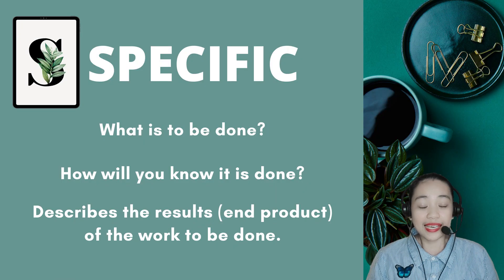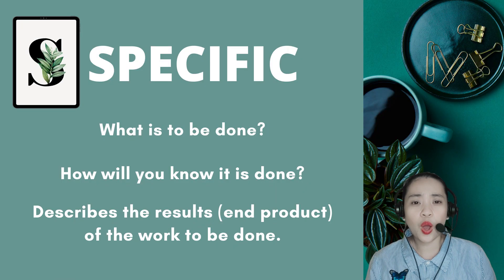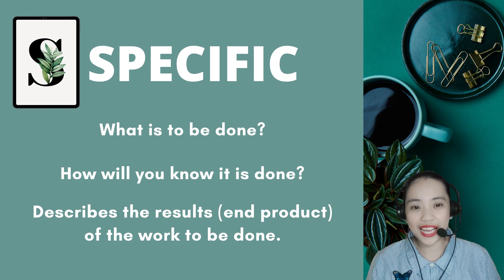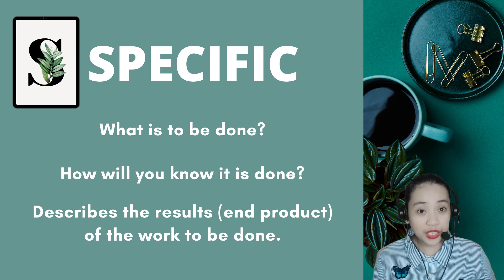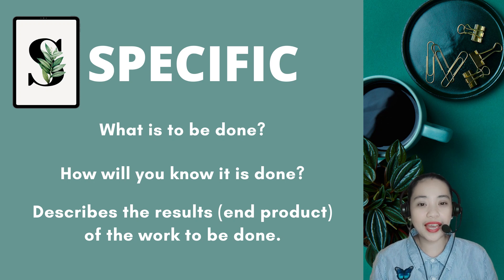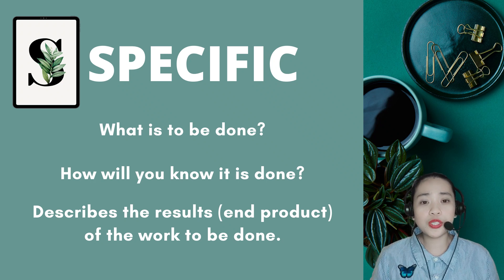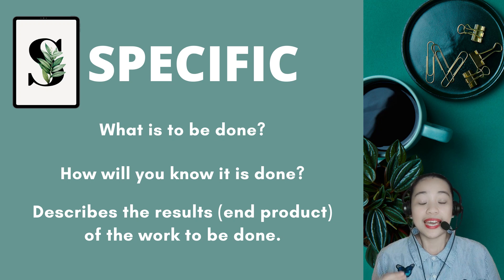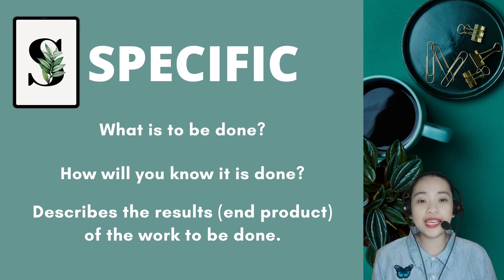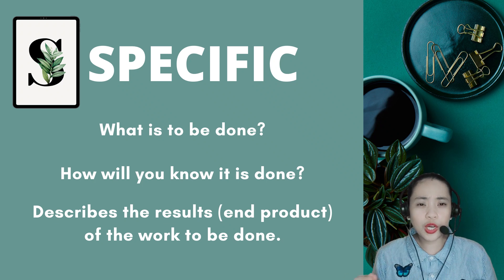Let's start with SPECIFIC. It answers the questions: what is to be done, and how will you know it is done? It describes the results or end product of the work to be done, written in such a way that anyone reading the objective will most likely interpret it the same way. To ensure an objective is specific, make sure it is observable — meaning somebody can see or hear it, physically observe it, or see someone doing something.